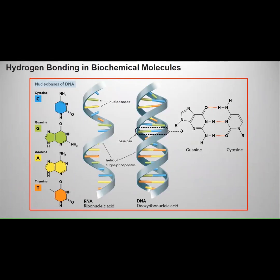Hydrogen bonding is responsible for linking the different nucleobases of DNA, as you can see here, and making this helical shape. This helical shape is made by the hydrogen bonding.